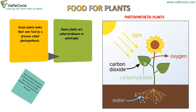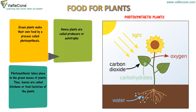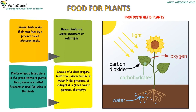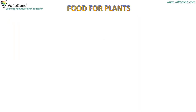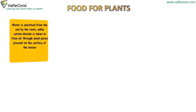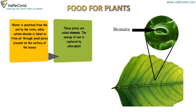Photosynthesis takes place in the green leaves of plants. Thus, leaves are called kitchens or food factories of the plants. Leaves prepare food from carbon dioxide and water in the presence of sunlight and a green colour pigment called chlorophyll. Water is absorbed from the soil by the roots, while carbon dioxide is taken in from air through small pores present on the surface of the leaves, called stomata. The energy of the sun is captured by chlorophyll.